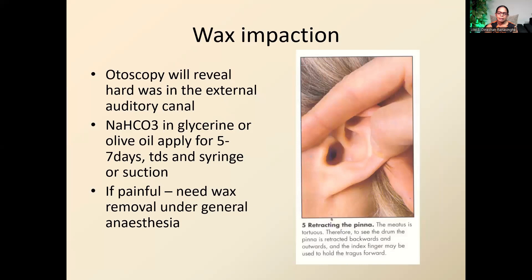Earwax impaction is a common issue where the patient presents with ear pain. If you have an otoscope, look inside — if you see hard impacted wax, you need to remove it, but first soften the wax with a softening agent such as sodium bicarbonate, glycerine, or olive oil. Once the wax is soft enough, remove it. In specialized centers we vacuum the ears, but in a GP setting you can do syringing if you are competent.